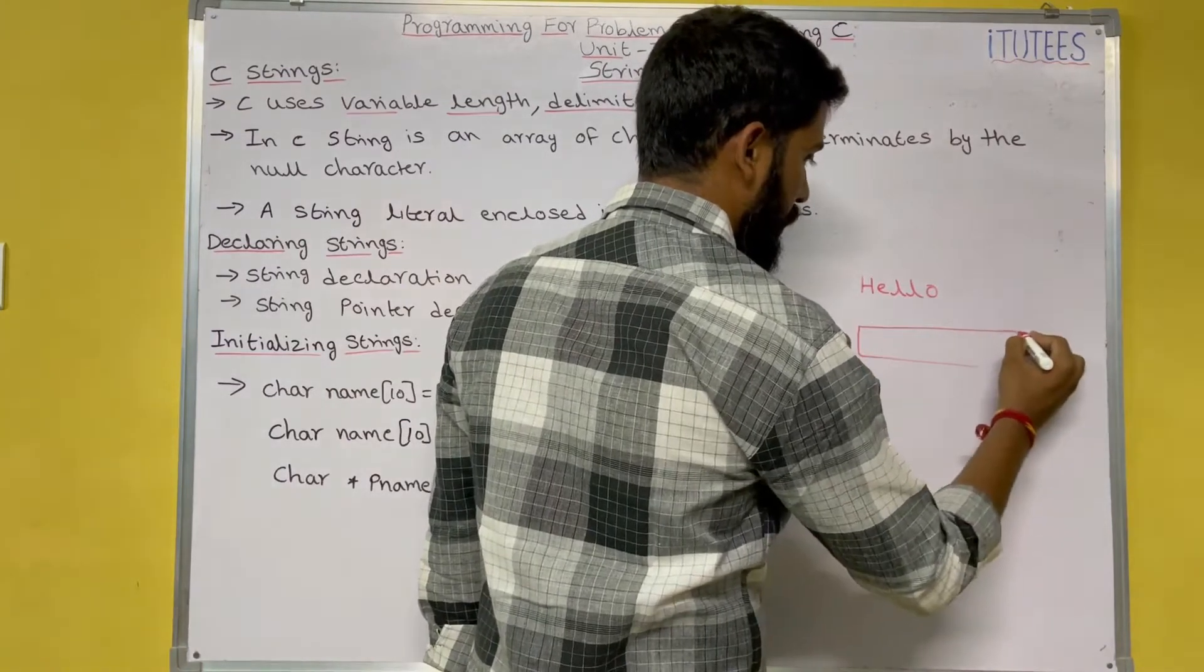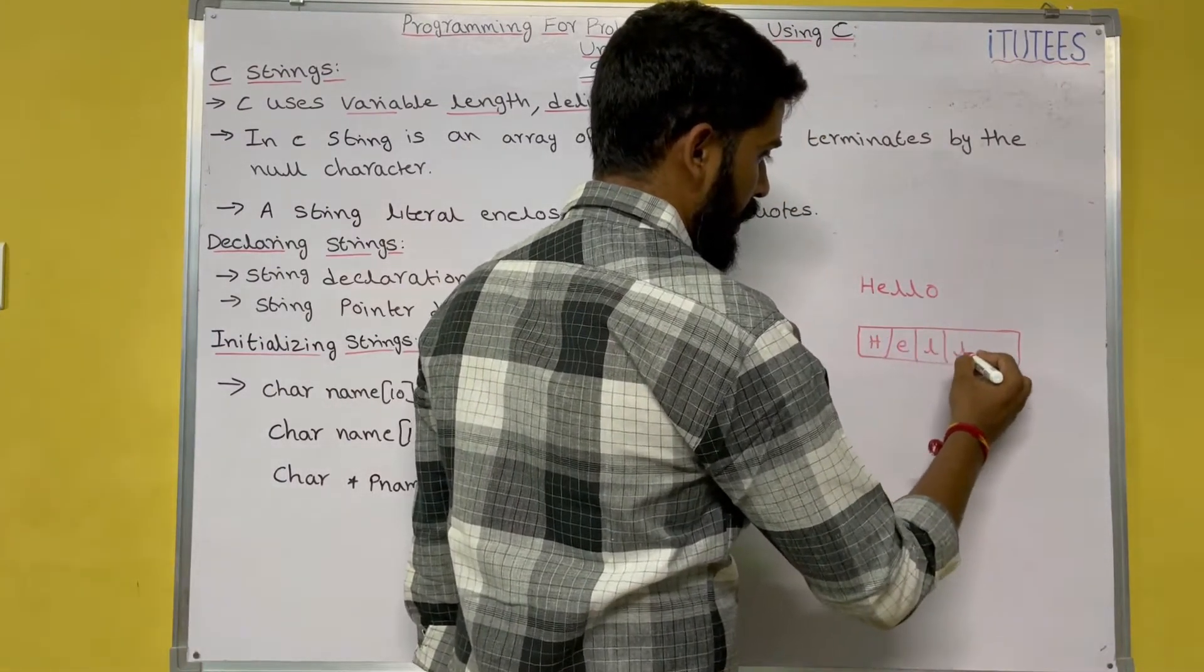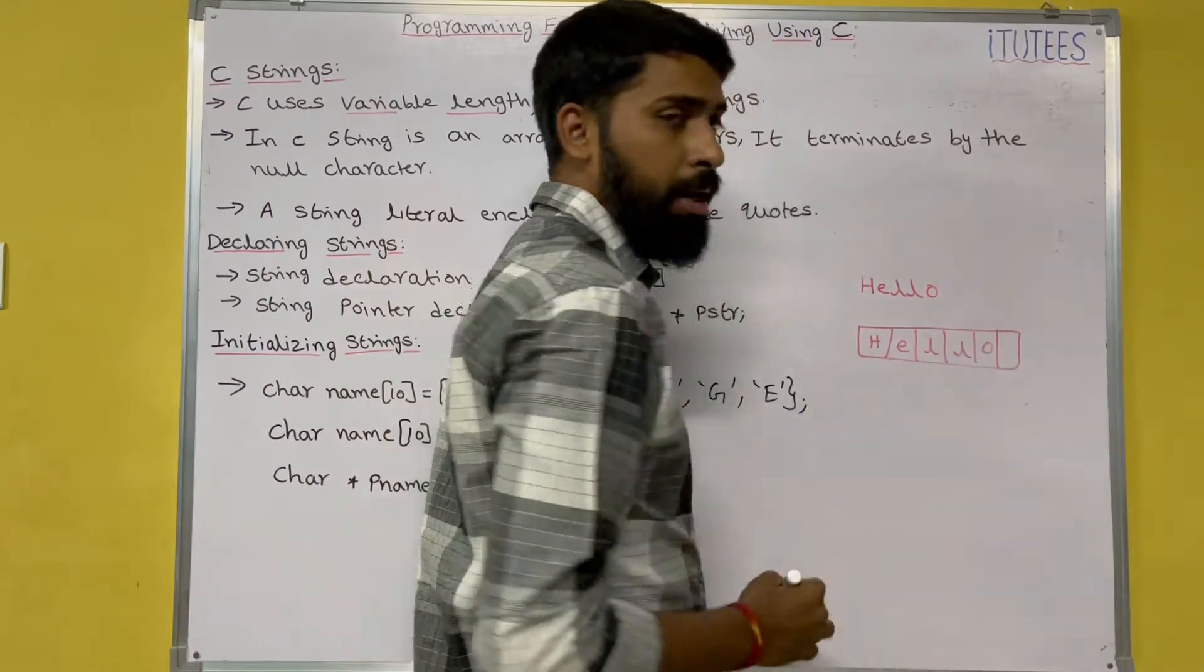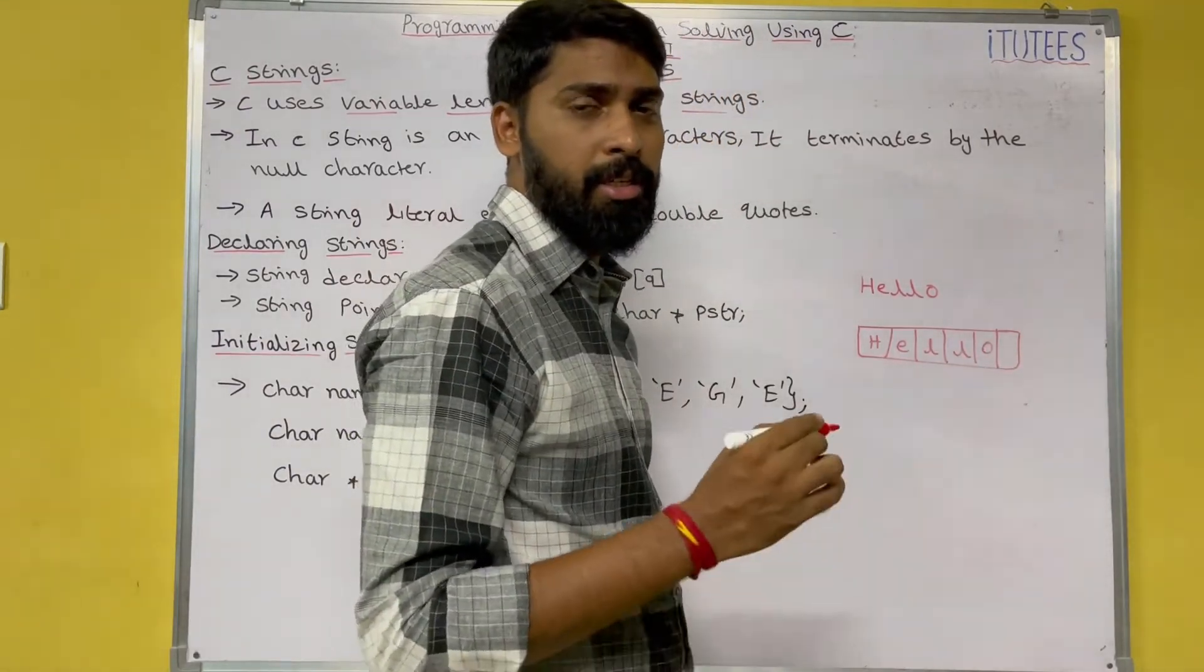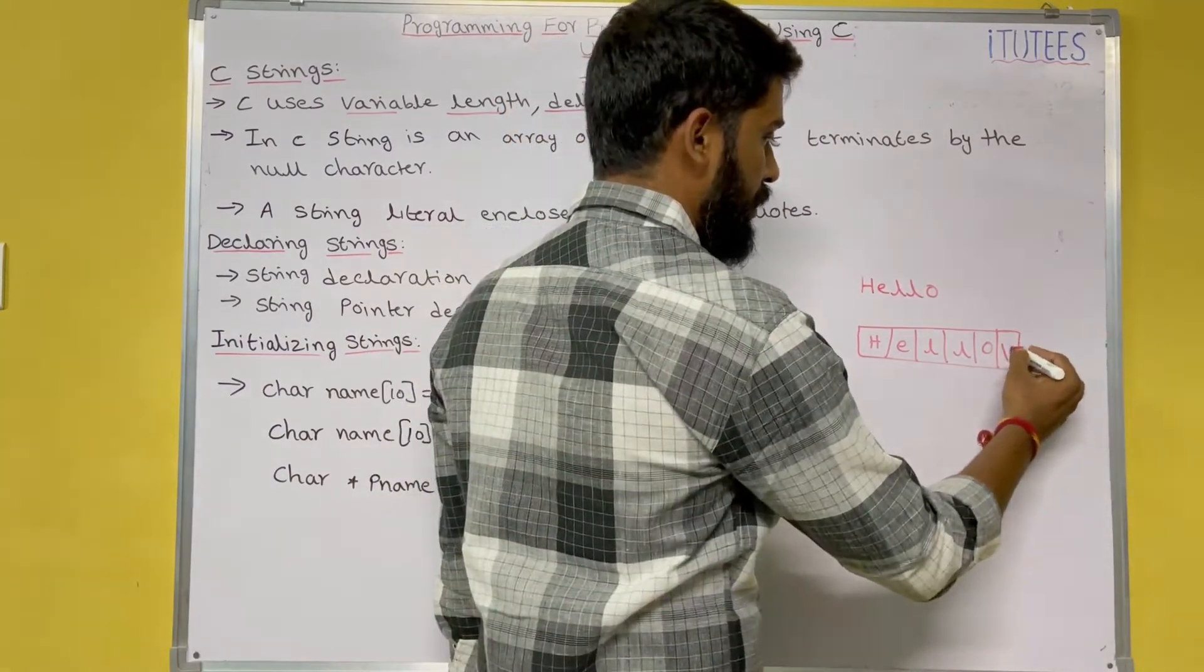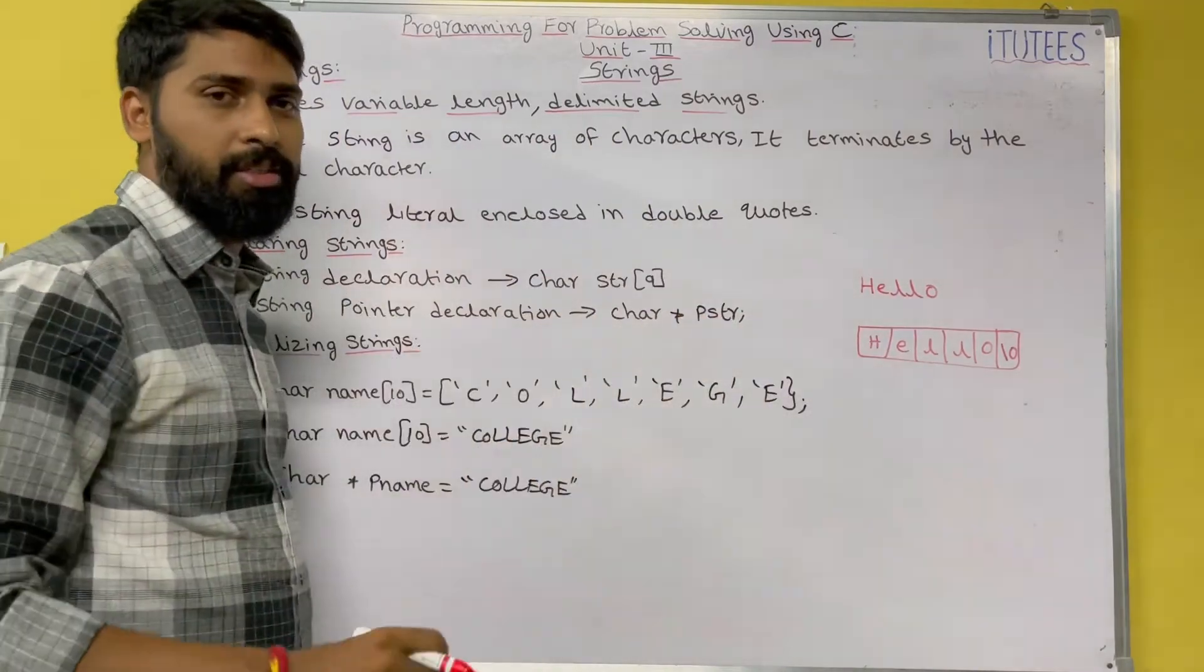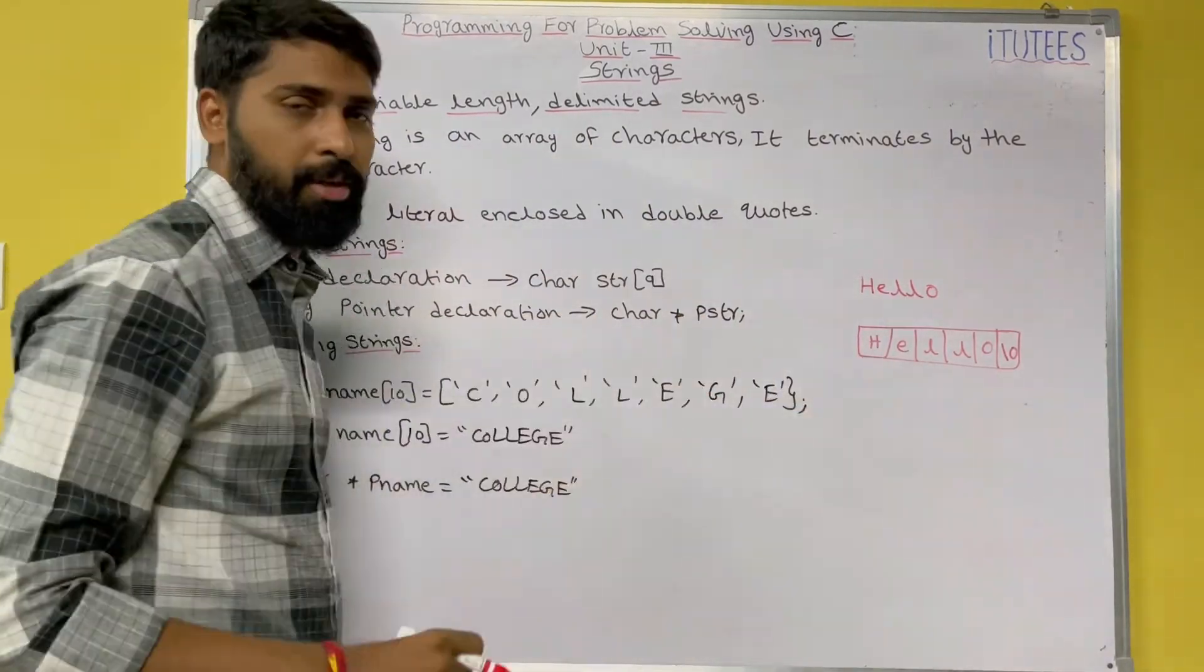It stores like this: h, e, l, l, o and end of the string is identified with the delimiter slash zero. So C uses variable length delimited strings. Okay, so this is the example.